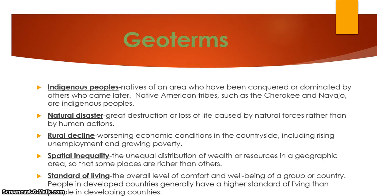Now, geo terms. On your follow-on guide you should define the following terms — please stop and pause as needed. Indigenous people: simply put, these are natives of a region. Natural disaster: great destruction or loss of life caused by natural forces. Rural decline: worsening economic conditions in the countryside, including rising unemployment and growing poverty.